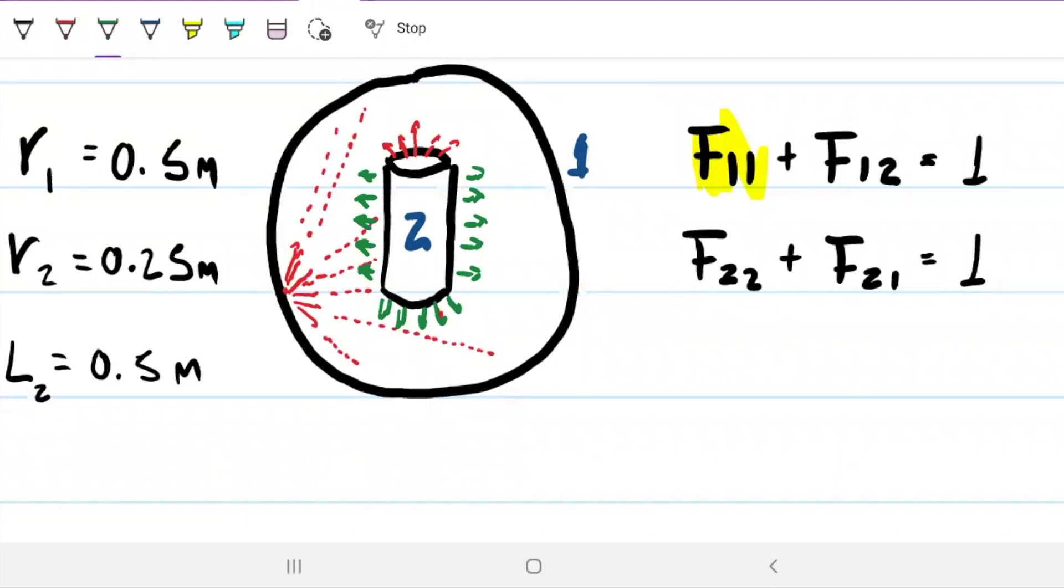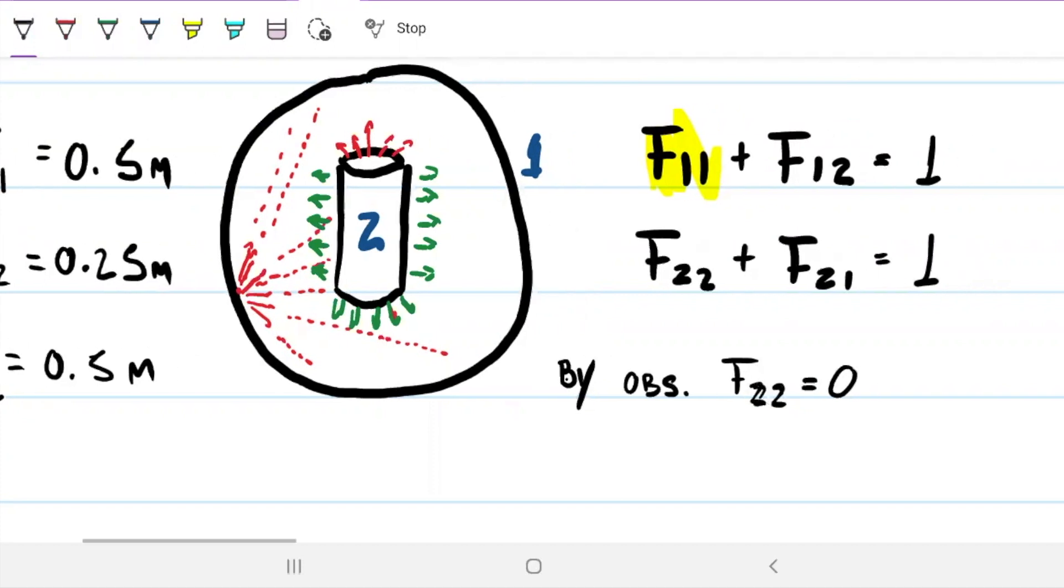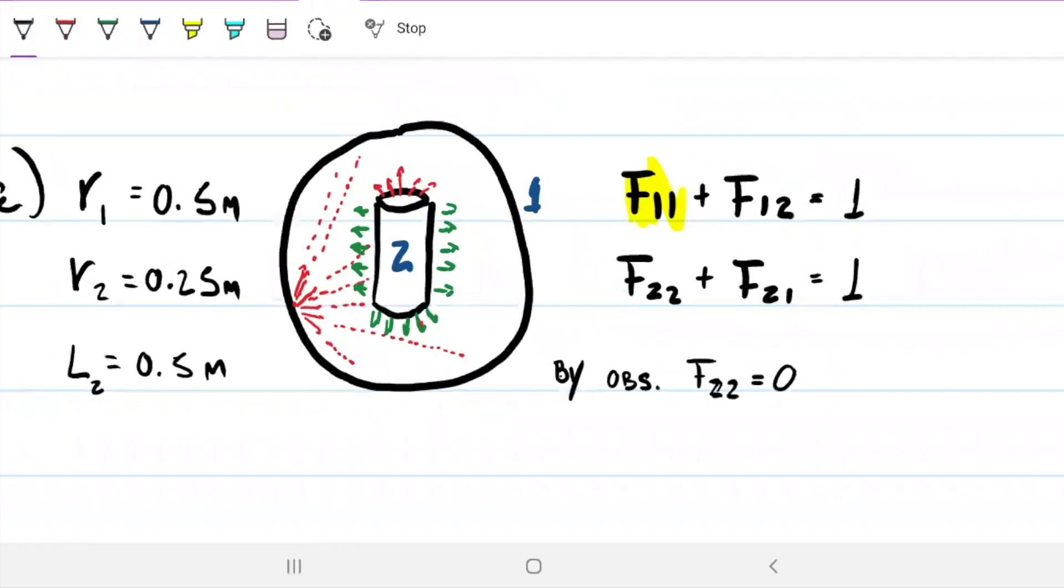In other words, what does that tell us? It tells us that by observation, F22 equals 0. If F22 is 0, then F21 is 1. So what does F21 being 1 mean? It means that all the energy that leaves the cylinder has to go to the sphere somehow.